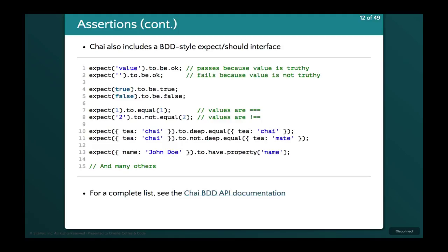There's also the BDD style that Chai provides. We can use the expect or should interface. It's just another way of writing assertions in a more English-language style. We can say we expect the value to be okay, or expect one to equal one. It reads more like plain English if that's the kind of test you want to write, and you can easily do either style.